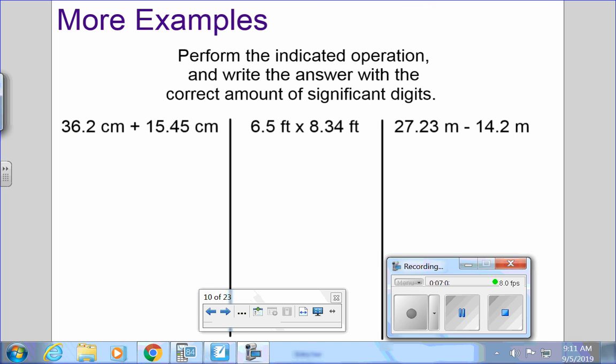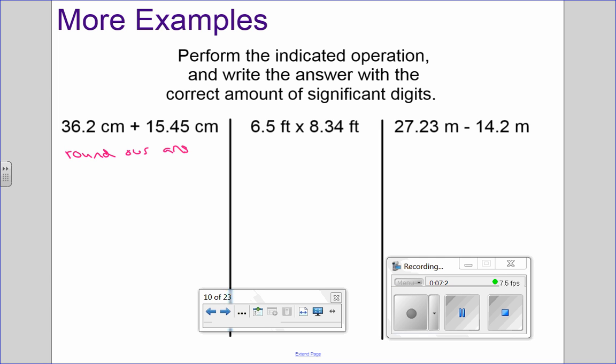So before we head to our calculators and actually try these adding and multiplying problems, we're going to have to figure out which is the least accurate number. So how many significant figures are you seeing here? Three. How many are you seeing here? Four. So the least accurate is this one. And we're going to want to round our answer to three significant digits. So let's grab the calculator and actually do that addition problem. You got 51.65. However, 51.65 has four significant digits. We need to round to three significant digits. So 51.7 would be the final answer you'd want. We rounded this six up to a seven because to the right of it was a five. You know rounding.